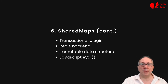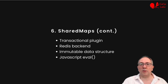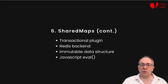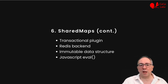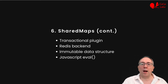Share maps are implemented with four technologies: a transactional plugin that provides external consistency, a Redis backend to checkpoint and propagate updates, an immutable data structure with structural sharing that respects serialization, and the JavaScript eval function to execute serialized code.